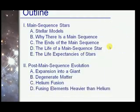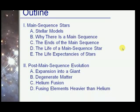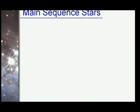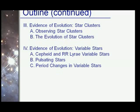Here is the outline of this lecture. First we will see stellar models, then we will understand why there are main sequence stars and study the life of a main sequence star. Then we will see the post main sequence — how stars expand into giants, degenerate matter, helium fusion, and fusing elements heavier than helium. After that we will look at evidence of evolution at star clusters, the evolution of star clusters, evidence from variable stars, pulsating stars, and period changes in variable stars.